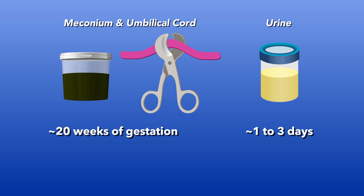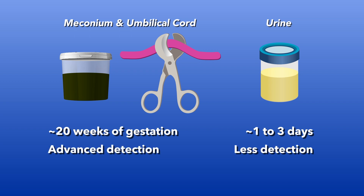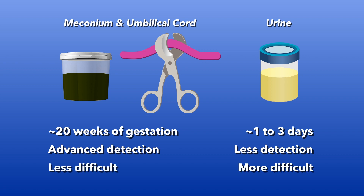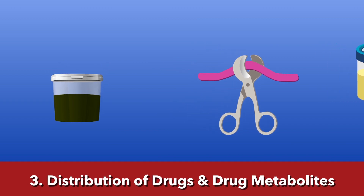In-house urine testing may not include detection of more modern trending substances, and the collection itself is more difficult. The first void of urine is most relevant for exposure detection, but can be difficult on the newborn or may already be passed at birth.